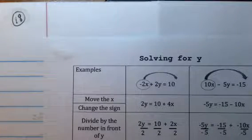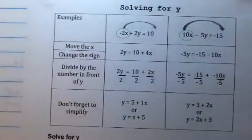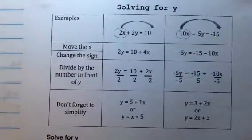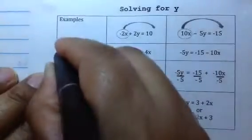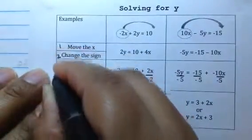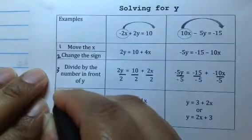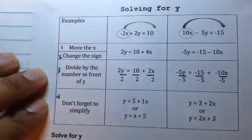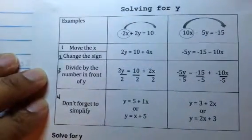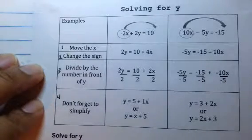Turn to page 18 of your iPad. We're going to be solving for Y. What I need you to know is that these are essentially four steps that you're doing every single time: move the X, change the sign, divide by the number in front of the Y, and don't forget to simplify.